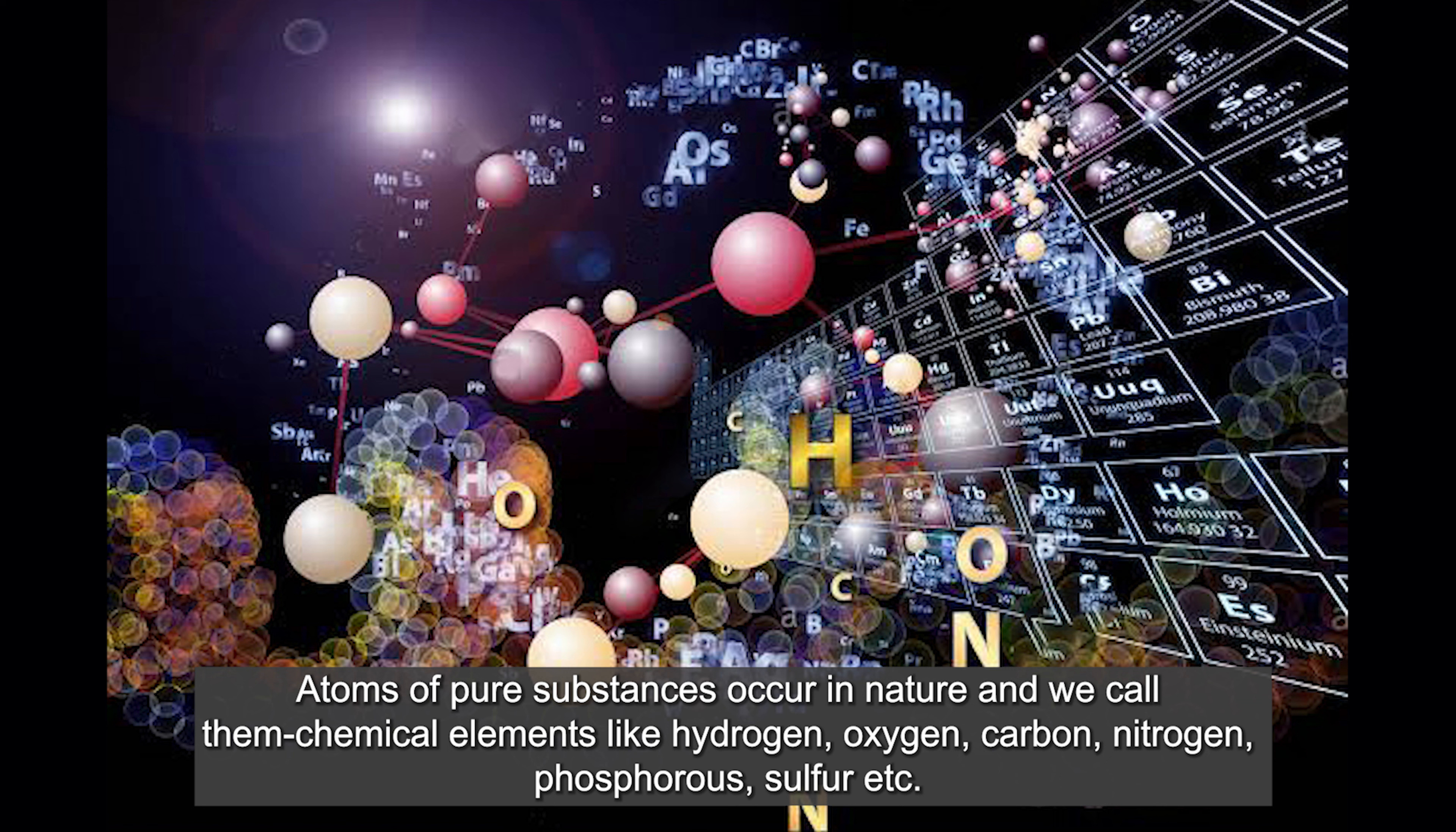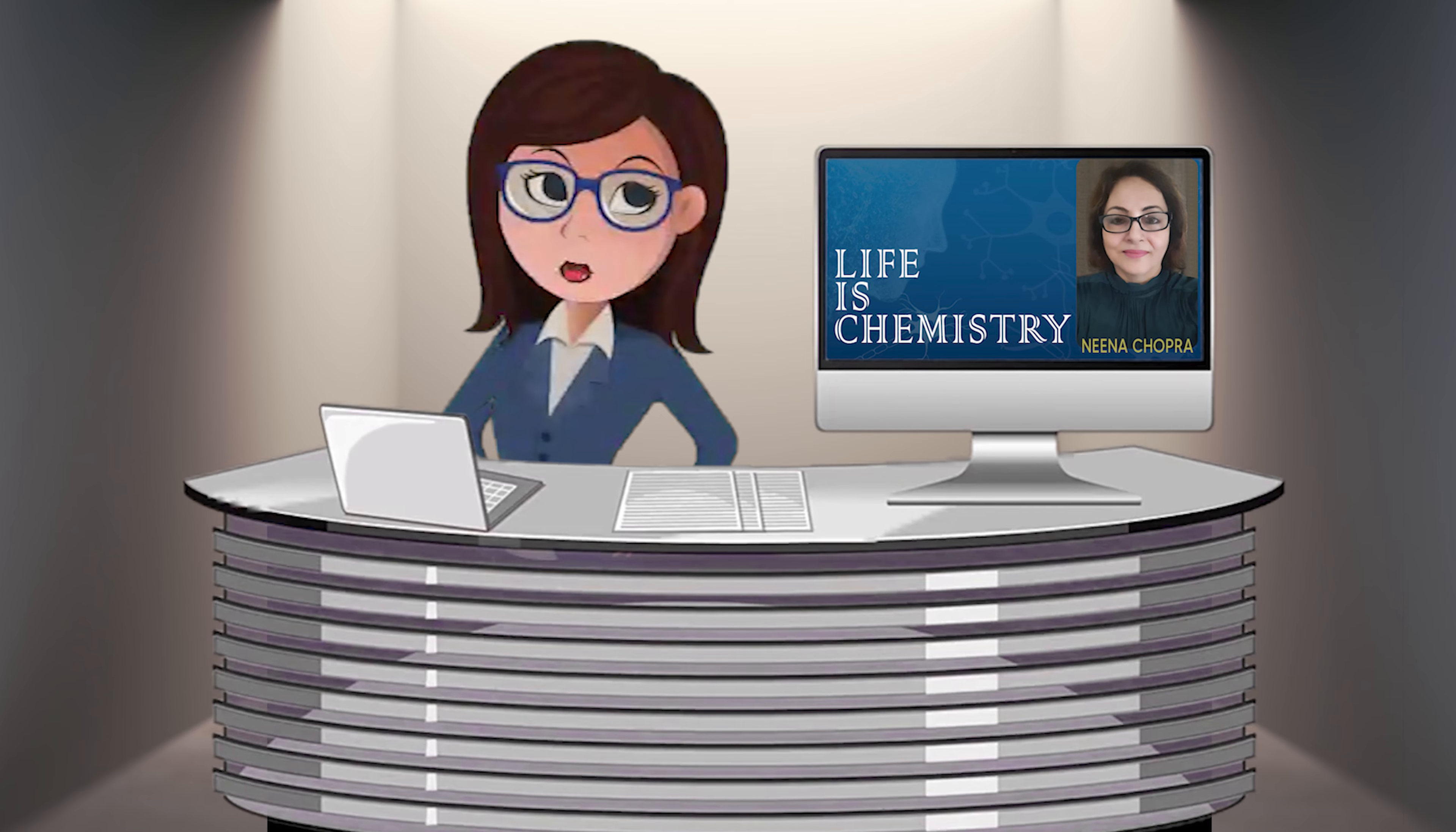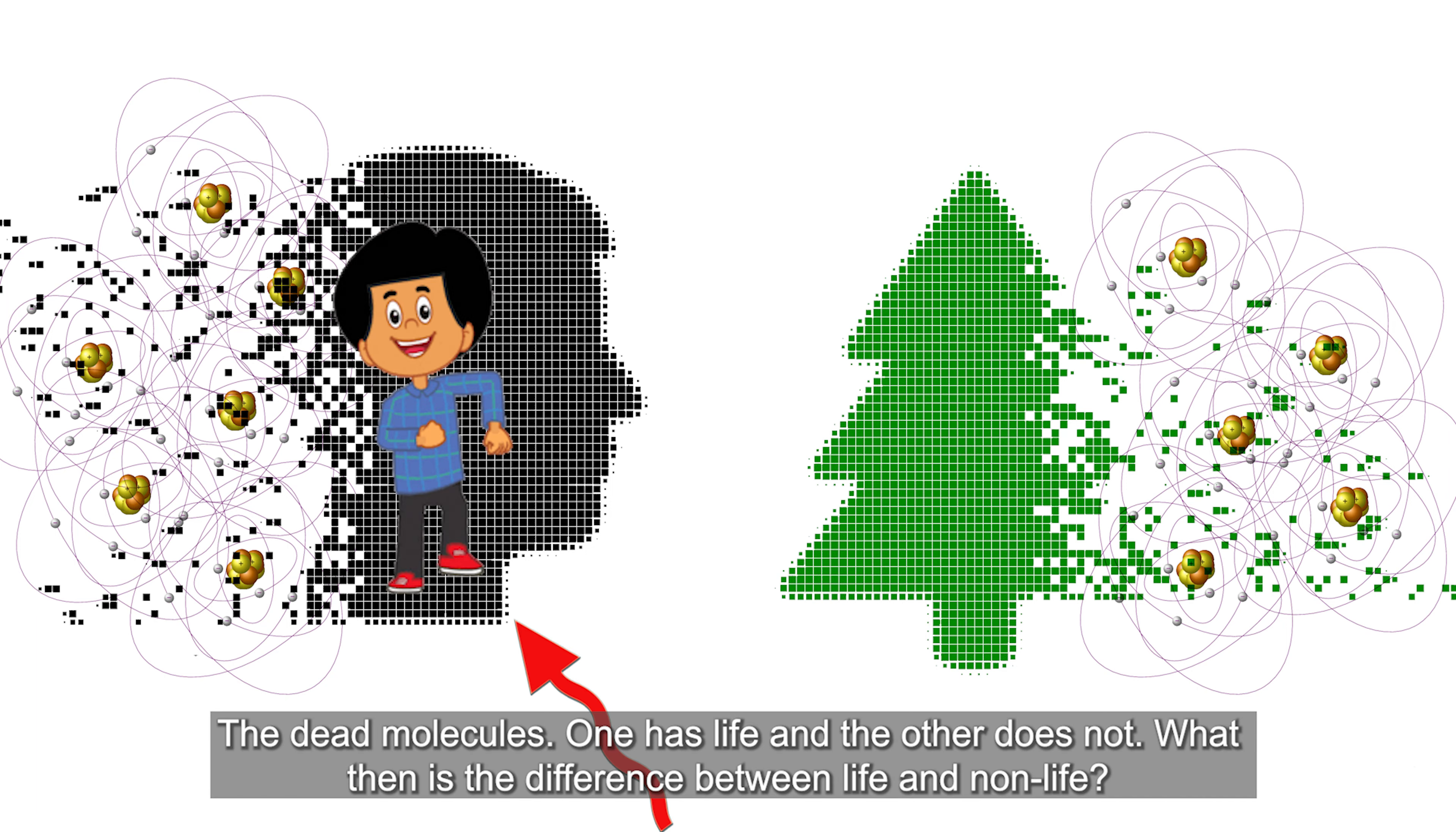Atoms of pure substances occur in nature and we call them chemical elements. You know some of them like hydrogen, oxygen, carbon, nitrogen, phosphorus, calcium, potassium, etc. So the material substance of everything including us is chemical elements.